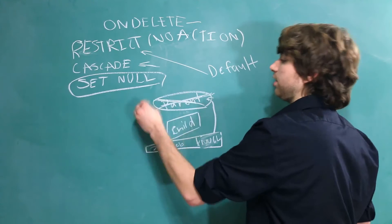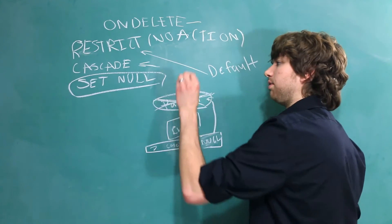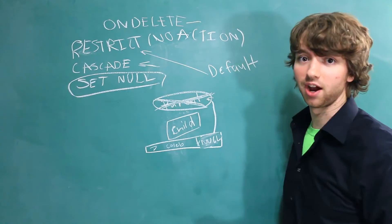Because if you did Restrict, you couldn't delete the parent. If you did Cascade, it would delete the child. But finally, SetNull will allow you to delete the parent without deleting the child.